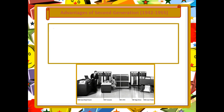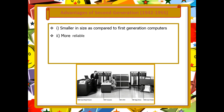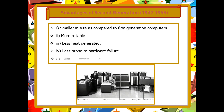Transistors were more reliable and faster than vacuum tubes. The advantages of second generation computers are: they were smaller in size compared to first generation computers, more reliable, and generated less heat. They were also less prone to hardware failure and had wider commercial use.